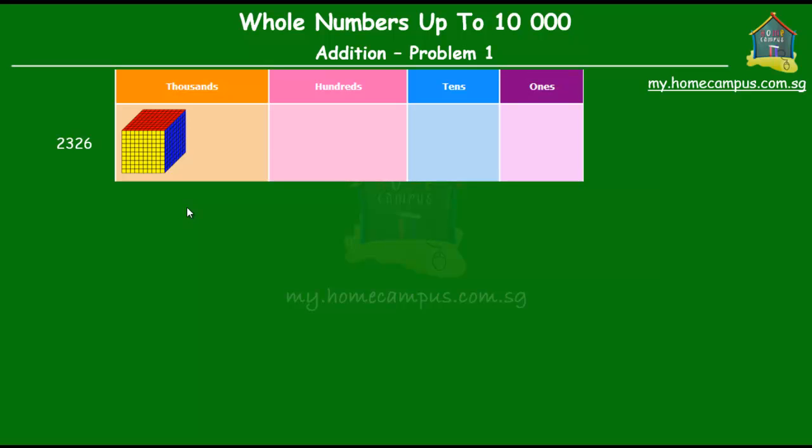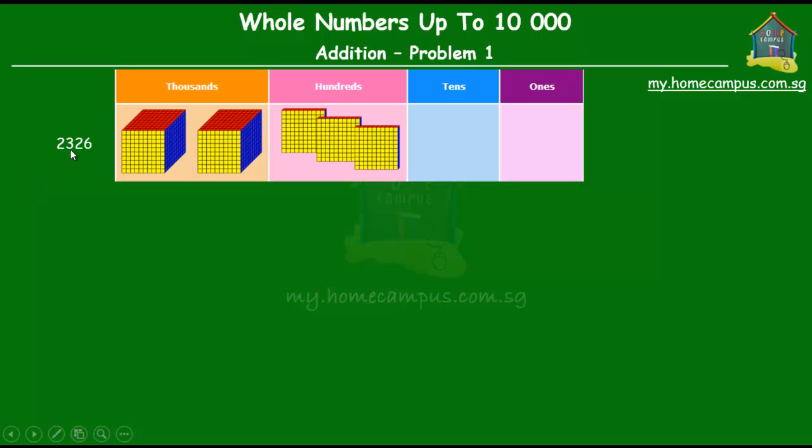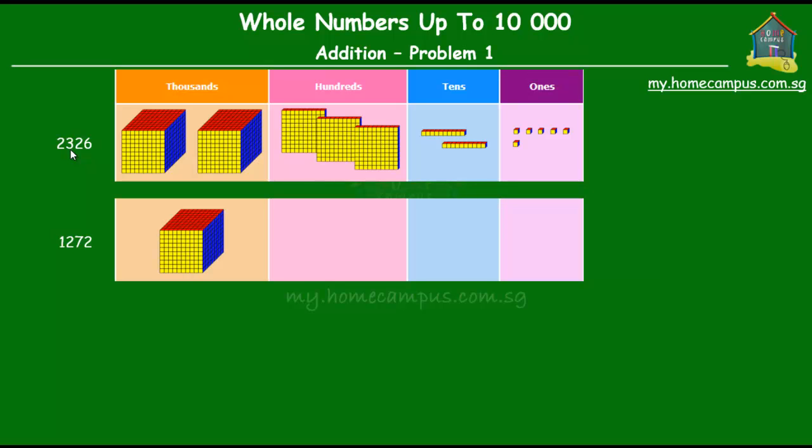So the two blocks in the thousands is for the two thousands in this number. Then there are three hundreds. Then there are two tens and six ones. To that, we will add the number one thousand, two hundred and seventy-two.